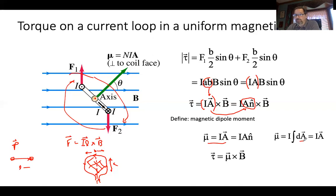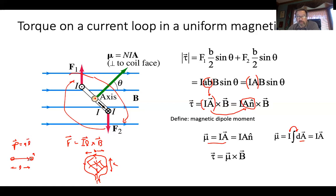If the current is constant over an area, I can bring it outside, and I get the current times the area as the magnetic dipole moment. The area again being the normal vector. If I take the current times that normal times the magnetic field, that's the torque. We define the magnetic dipole moment mu as the current times the area, and that's what mu is — a dipole.